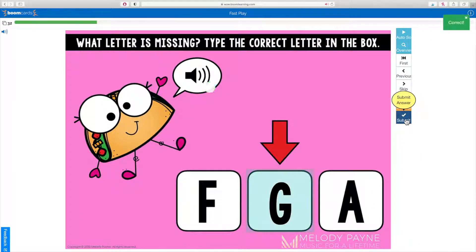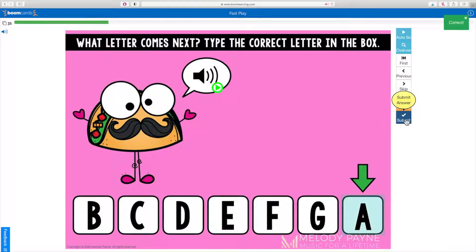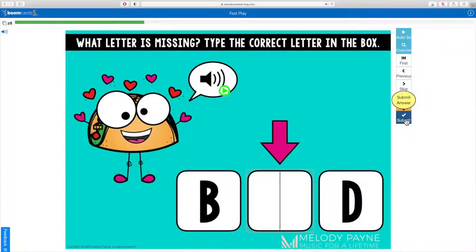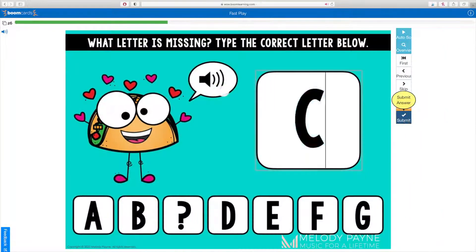Students will spell the music alphabet going forwards and backwards and higher and lower. They will also complete the music alphabet with the missing letter with all seven letters shown on the slides.